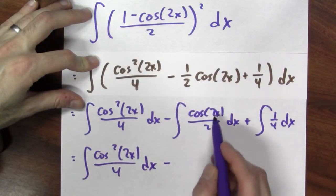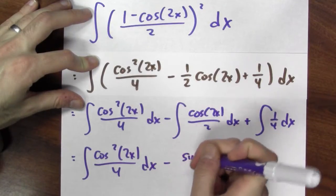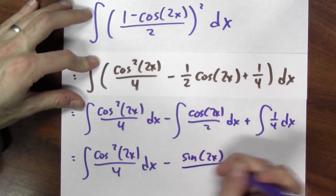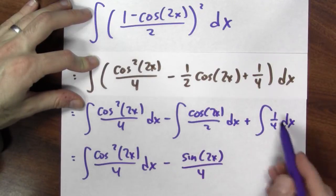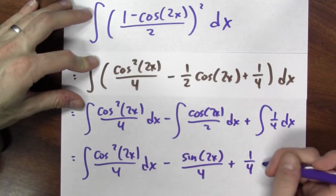The integral of cosine squared 2x over 4 dx. This here, well, I could do this by making a substitution, u equals 2x, say. And then I'll get that this is sine of 2x divided by 4. And if I integrate a quarter, I get 1 fourth x.